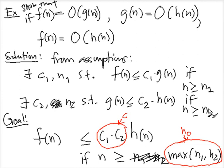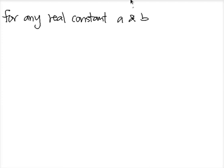So let's look at another example. This is the example from one of the exercises. So let's say, for any real constant a and b, where b is larger than 0, it asks you to show that (n+a)^b is O of n^b.